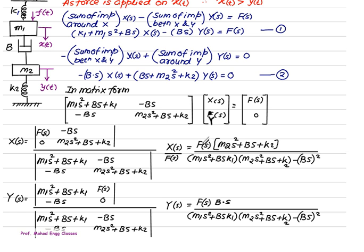We can shift f(s) to get x(s)/f(s) or y(s)/f(s). Cancelling f(s) from numerator and denominator gives us the transfer function. Similarly, we write y(s)/f(s), cancel f(s), and obtain the transfer function for y(s).